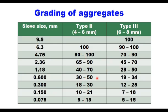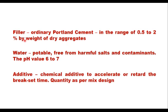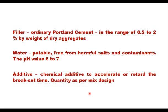The filler will be ordinary Portland cement, generally in the range of 0.5 to 2% by weight of dry aggregates. Water shall be potable tap water, free from harmful salts and contaminants, with a pH value in the range of 6 to 7. A chemical additive to accelerate or retard break time or to improve the finished surface is used; the quantity shall be decided by mix design and adjusted as per climatic conditions such as humidity and temperature at site.